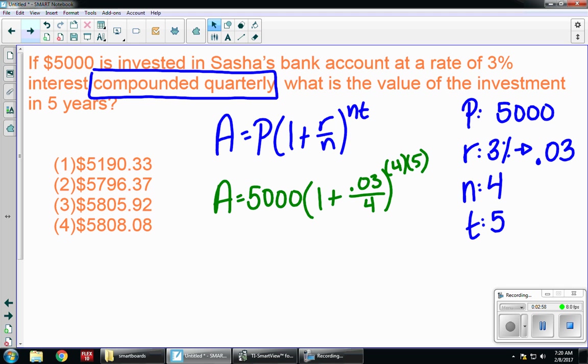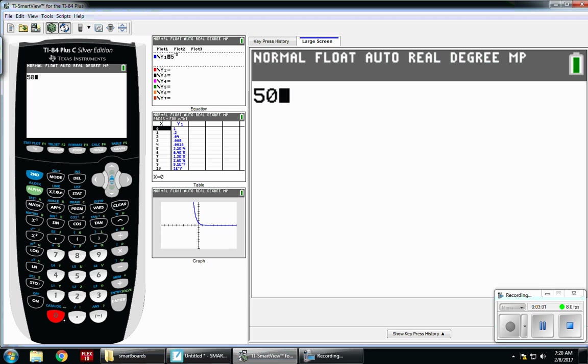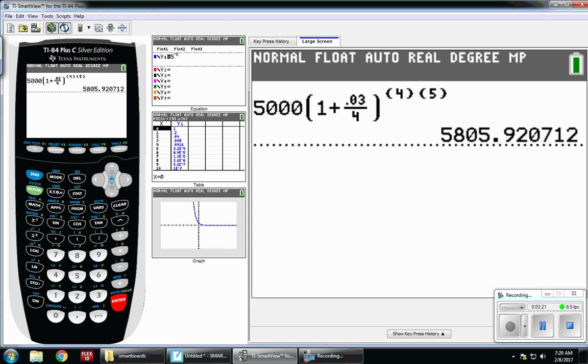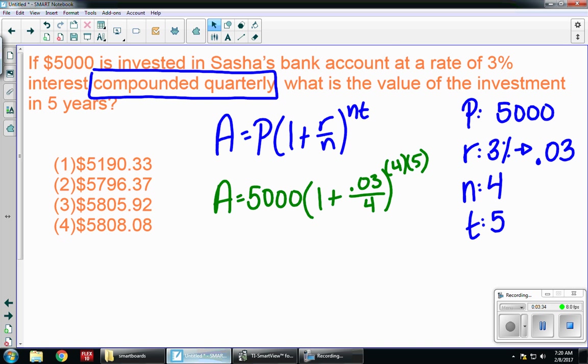And then I'm going to go to my calculator and type that in. 5,000, parentheses, 1 plus, to set up my fraction, .03 over 4, to the exponent of 4 times 5. There we go. And there is the amount that we'll have. And we always want to round to the nearest cent if they don't tell us. But in this case, we have a multiple choice. So let's hope we find our answer. And we do. Choice three.